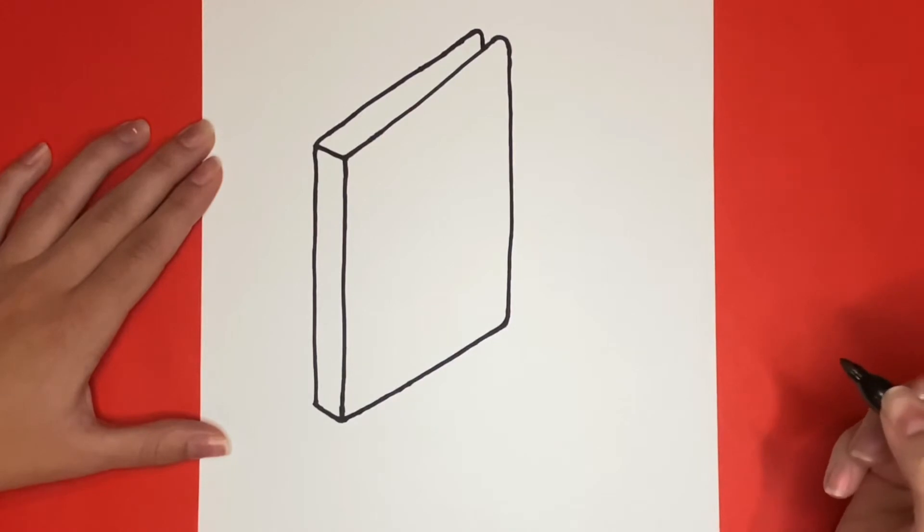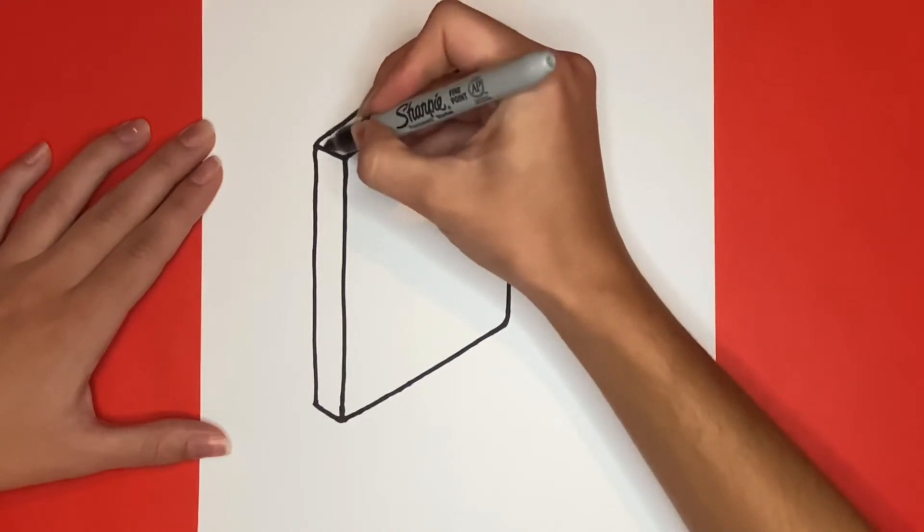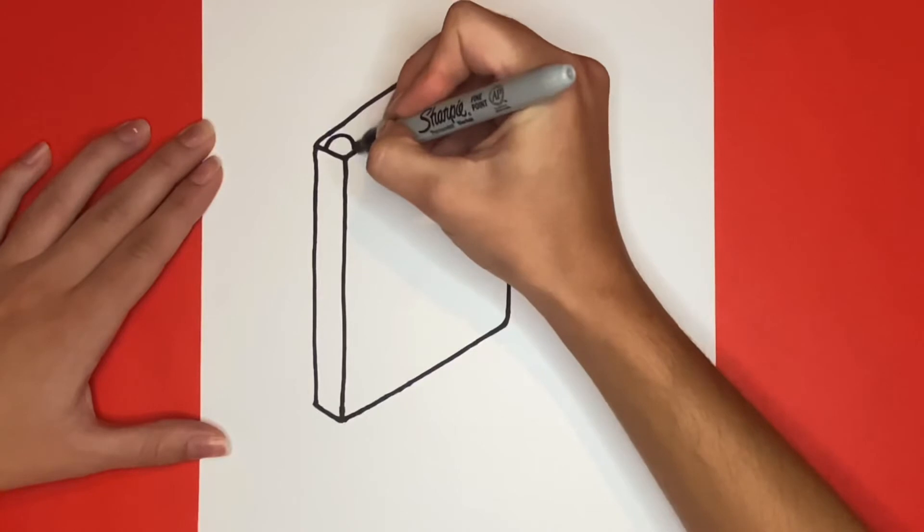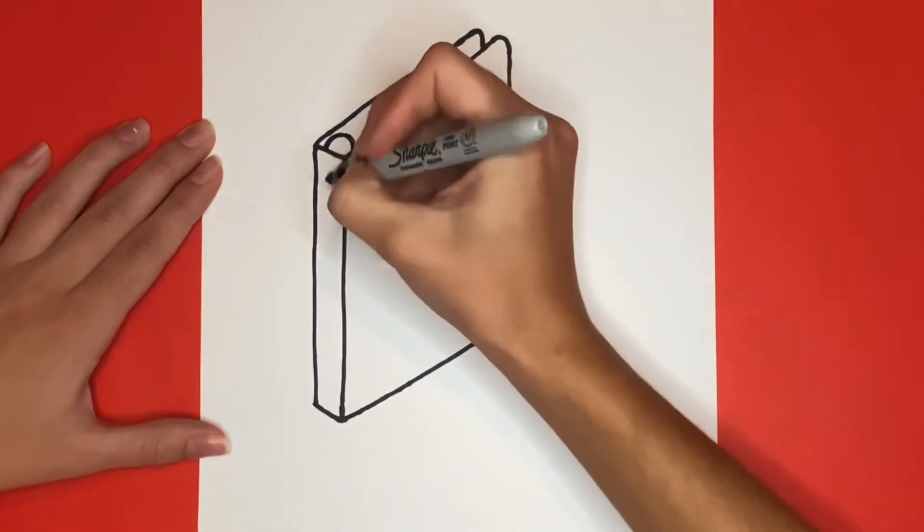Then near the spine of our binder, we are going to draw a half circle-like shape. This will be for the top ring inside of our binder. Then we're going to add two small circles on the spine of our binder for detail.